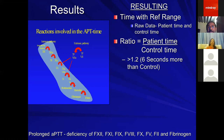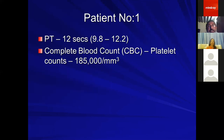This patient also had a prothrombin time of 12 seconds and a normal platelet count of 185,000. What is prothrombin time? Prothrombin time is also a plasma clotting time — the time taken by recalcified plasma to clot in the presence of tissue factor. Tissue factor activates the extrinsic pathway, and is nothing but thromboplastin, which has a lot of negatively charged phospholipid attached to it.